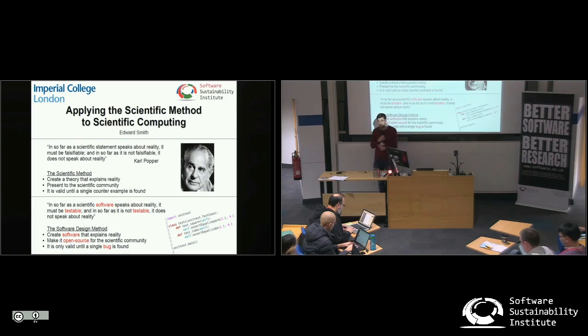But if we find one example where it's wrong, the theory fails. Newton's laws were found to be wrong — they get replaced by quantum mechanics, for example.